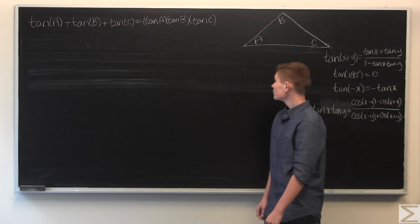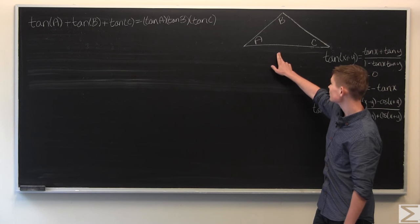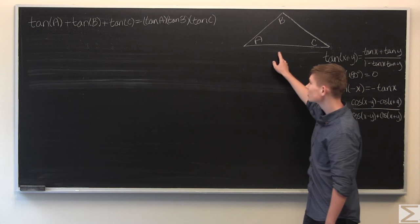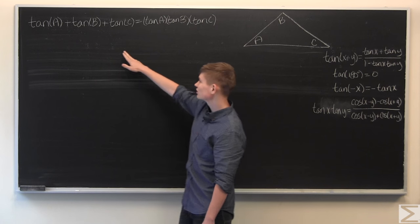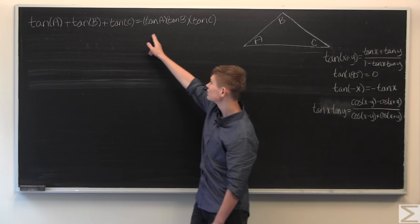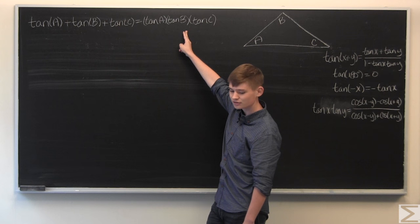This week's Problem of the Week was, given a non-right triangle, or a triangle with no angles that are equal to 90 degrees, show that the sum of the tangents of its angles is equal to the product of the tangents of its angles.